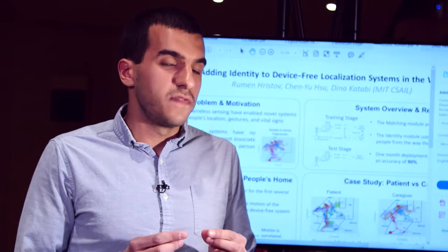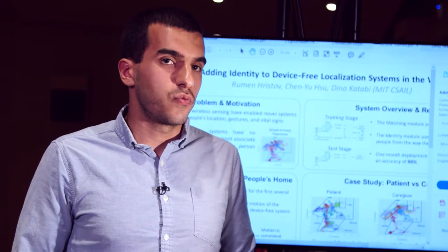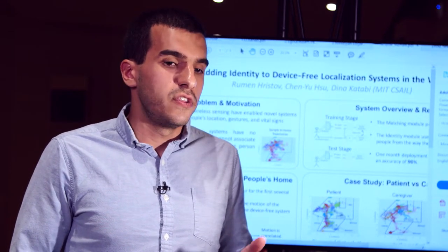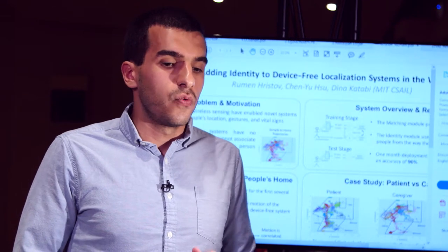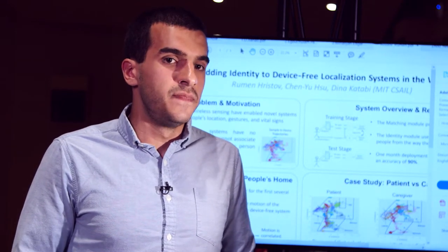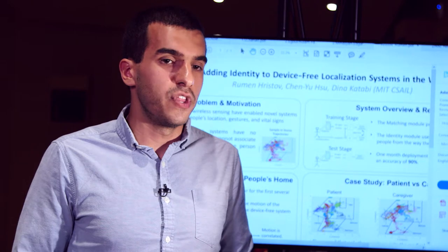Our solution is to give this small accelerometer sensor to the person that we're monitoring. And we correlate the motion from the accelerometer sensor with the output of our device. And this way we obtain label data in the homes.